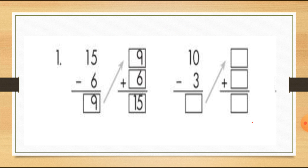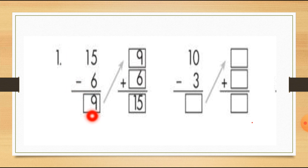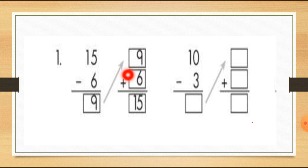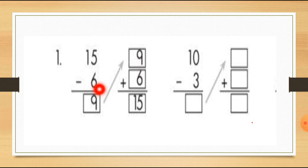Here is the next example: 15 minus 6 equals 9. We write this answer 9 and then add it back into 6. So 9 plus 6 equals 15. We get the answer 15, which matches. This answer is correct.